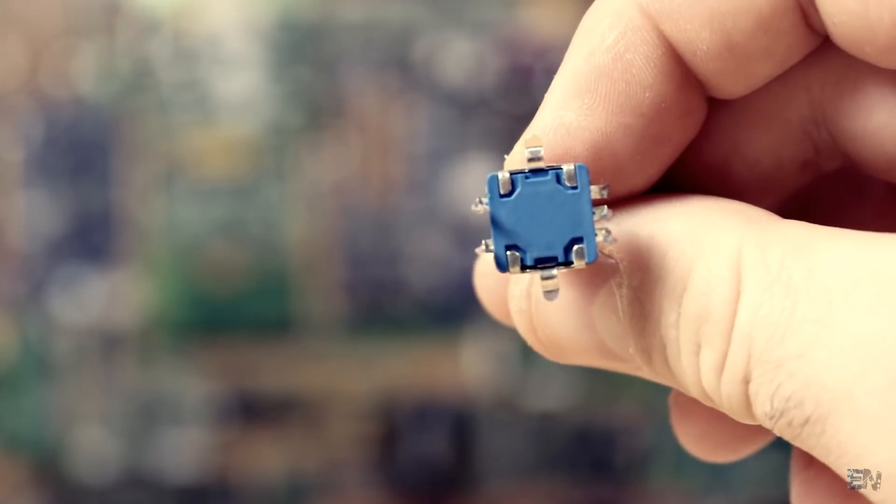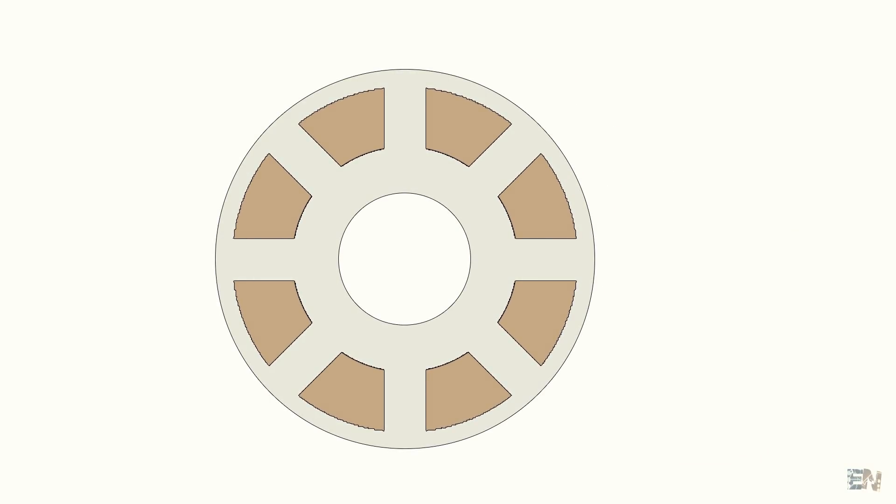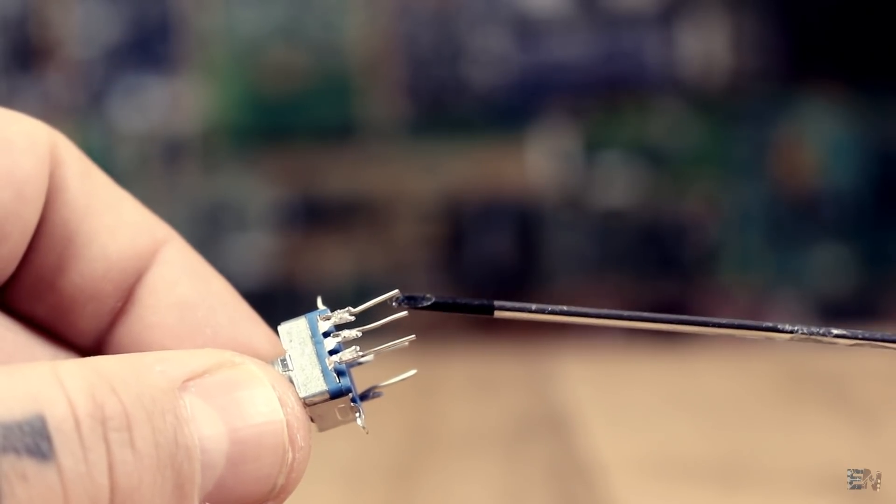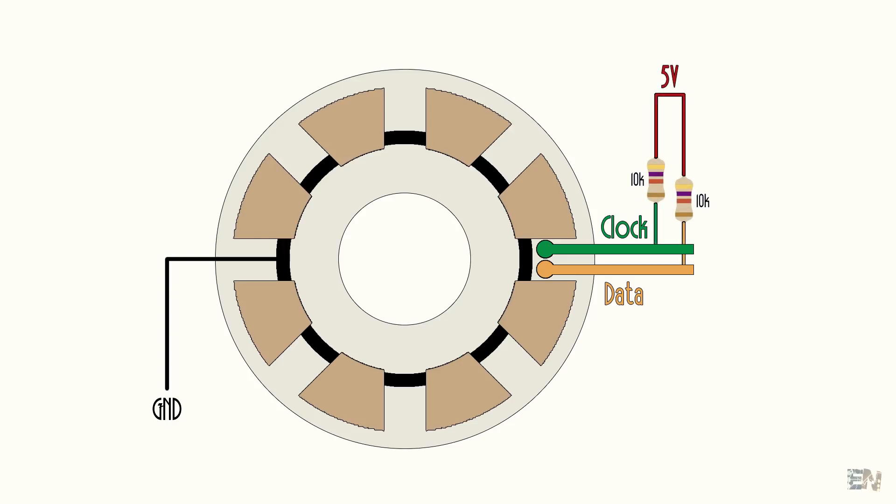So here is how this works. Inside we have a perimeter of copper connection like this one here. The more connectors we have, the better is the precision of the encoder. We also have two connectors that will be two of the encoder pin's outputs and we name those clock and data. All of the internal connectors are connected to ground. And the clock and data outputs will have a 10K pull-up resistor. So right now the pins are not touching the internal copper connectors. So the voltage at the output is 5V since we have the pull-up connected to that voltage.